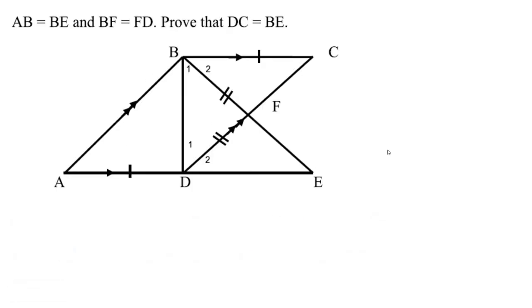Let's take a look at a question. It's a little bit harder. Okay, you're given that AB equals BE. You're supposed to prove that DC is equal to BE. That these two lines here are equal to each other.